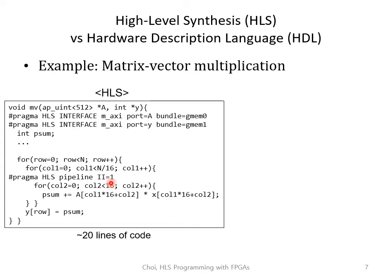With this pragma, we are telling HLS that we want pipelining. You can also specify a pragma to unroll certain loops. On the interface, you can specify the type of interface you want on each argument, like AXI or FIFO using a pragma. There are some coding styles that HLS prefers — for example, I have broken down the column loop into two loops, which helps HLS obtain higher parallelism. You also need to save vector X into a local array for data reuse.